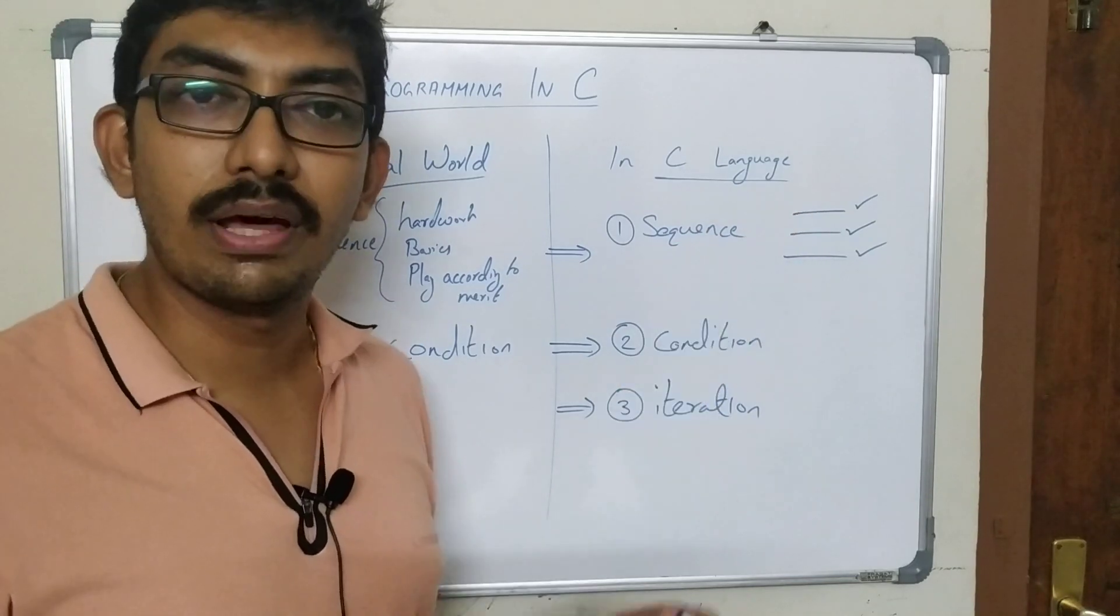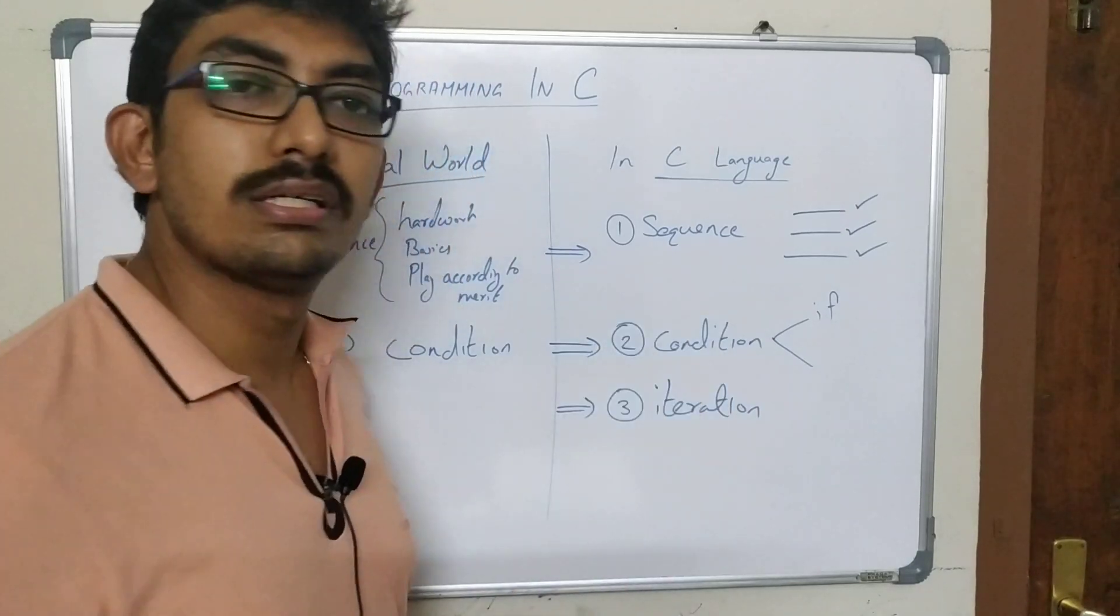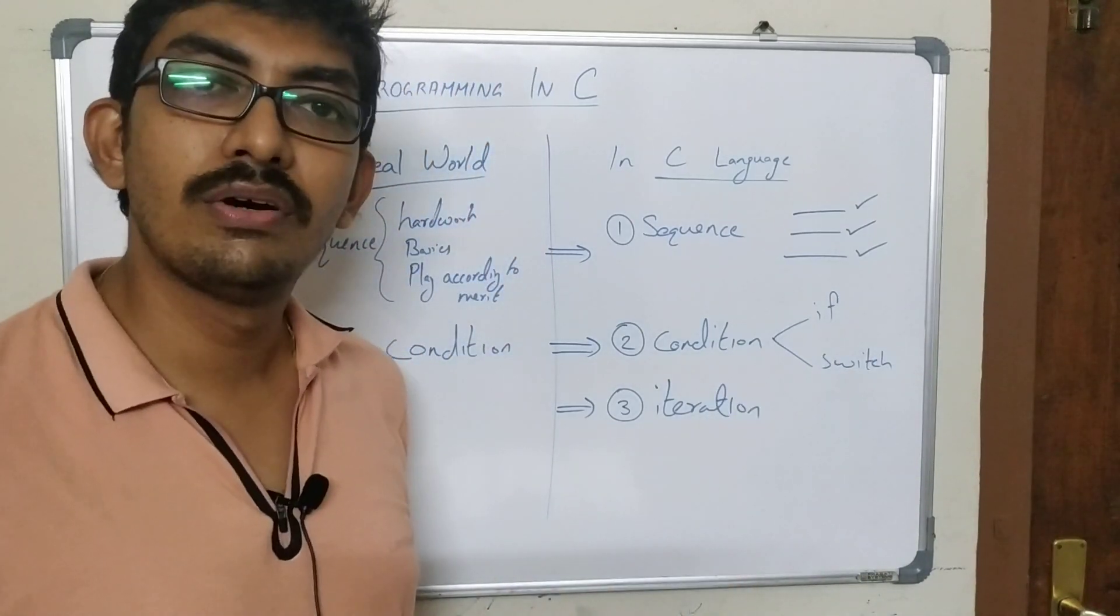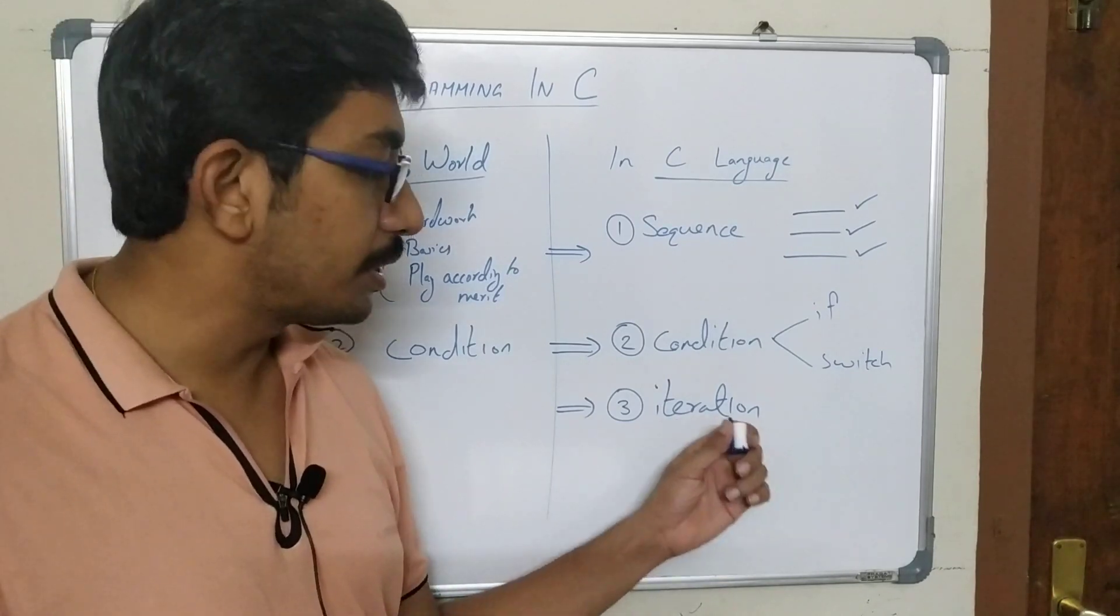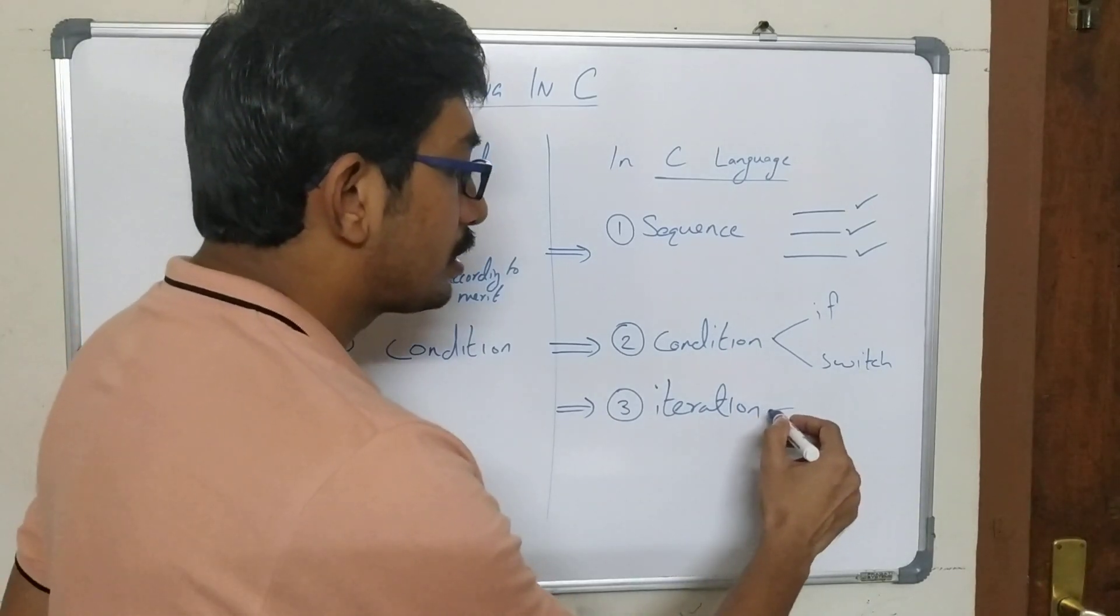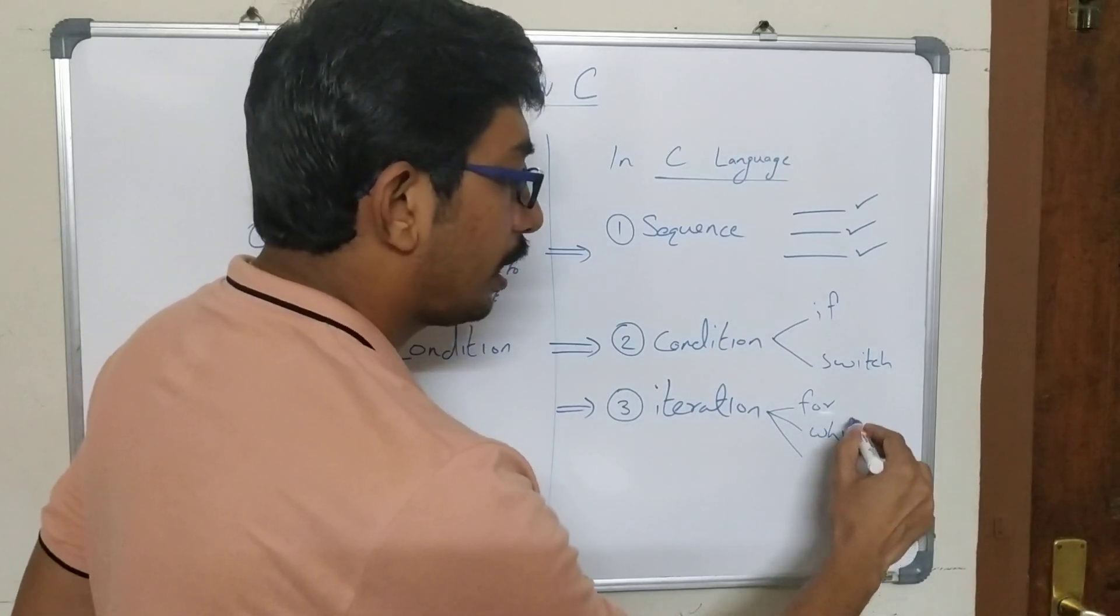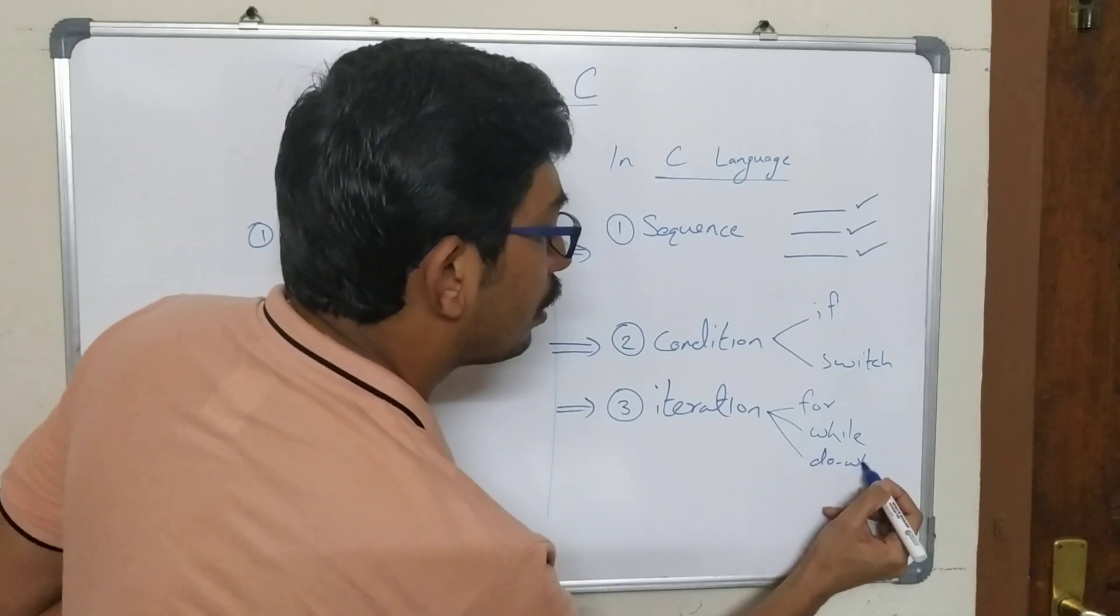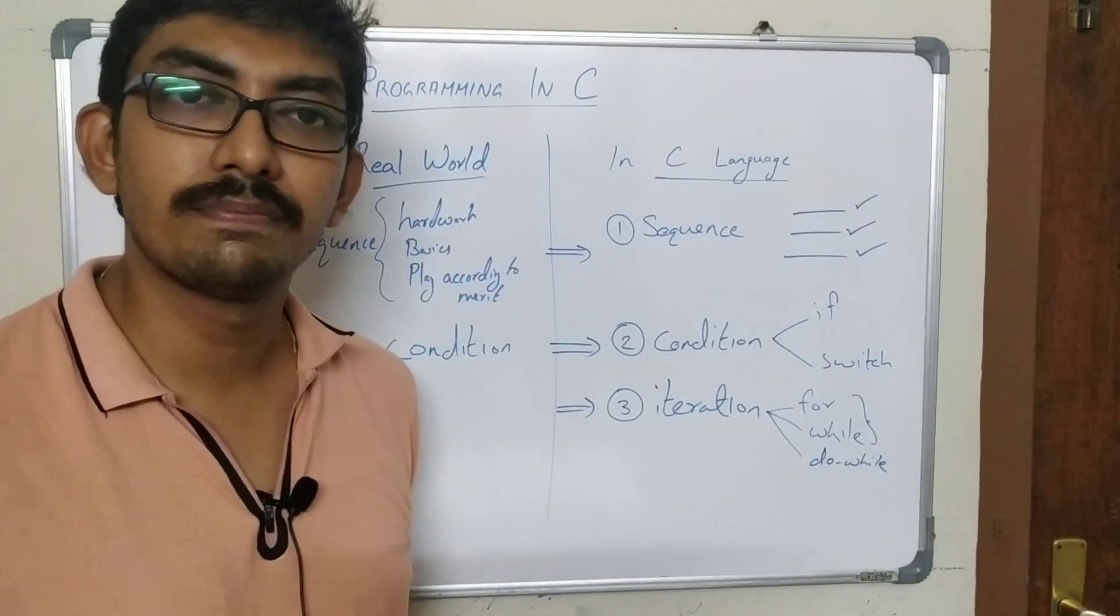Suppose if you have to go for condition or iteration, C provides if statement and switch statement for those conditional statements. And there are some scenarios as we have seen where we require iteration or repetition. For that in C you have three mechanisms: one is for loop, another one is while loop, and third one is do while loop. We will be focusing more on for and while.